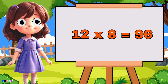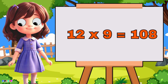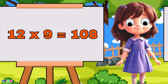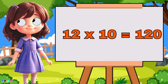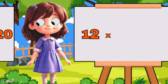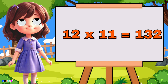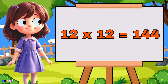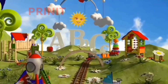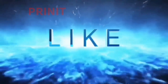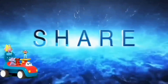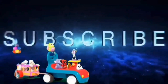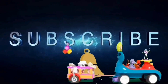Twelve eight's are ninety-four, twelve nine's are eighty-four, twelve nine's are one hundred and eighty-eight, twelve ten's are twenty-eight, twelve eleven's are one hundred and thirty-two, twelve twelve's are one hundred and forty-four.